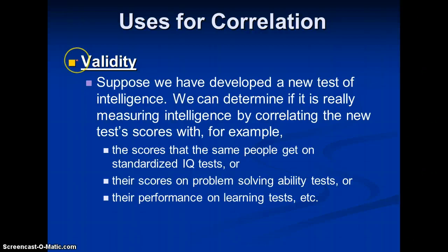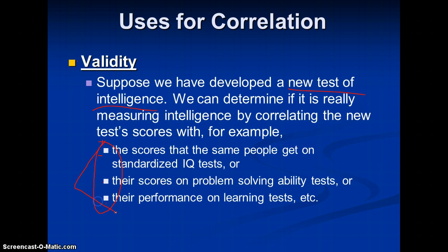We can also use correlation for validity. Suppose we've developed a new test of intelligence — we can determine if it's really measuring intelligence by correlating the new test scores with scores from a standardized intelligence test, problem-solving ability tests, or learning tests. If there is an association, it means our new test might also be valid for measuring that construct.